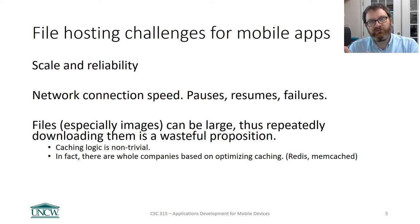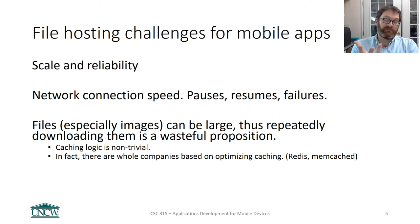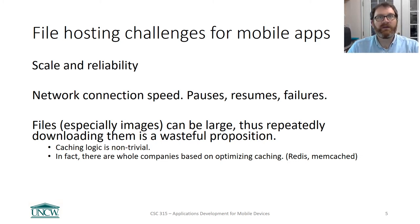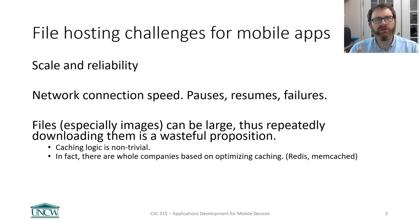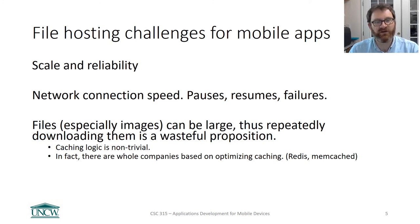Files — especially images — can be large. Asking your app to download all of Kim Kardashian's images every time you open Instagram would waste a lot of data. The solution to this is caching: you download the images once, and then you only re-download them if they have changed. Unfortunately, if you try to implement this logic yourself, it's non-trivial. There are whole companies who deal with optimizing caching at a large scale.